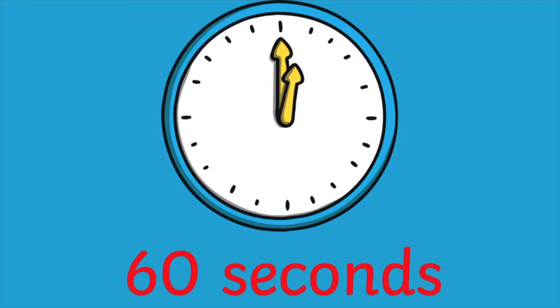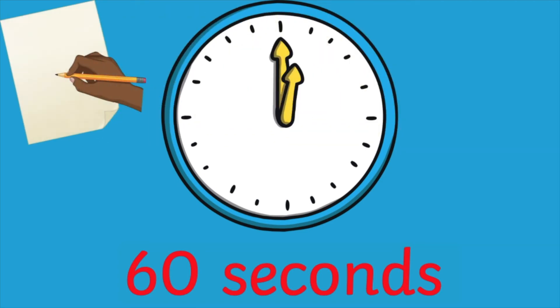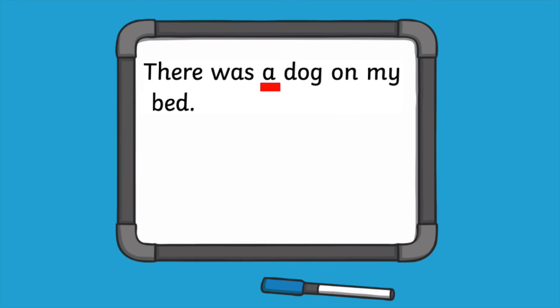Why not give your children the challenge of seeing how many times they can write the common exception word in 60 seconds? You could also get your children to write sentences on a whiteboard or in their books using the common exception word. You might want to challenge them to use the word at least twice in the sentence.